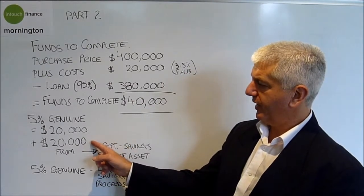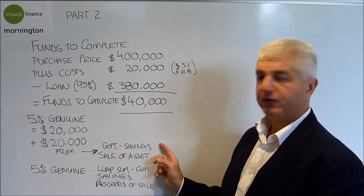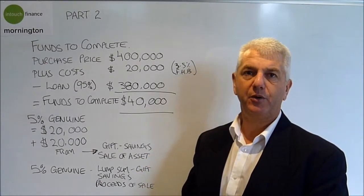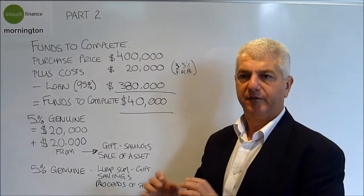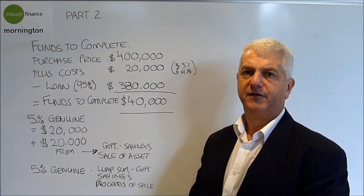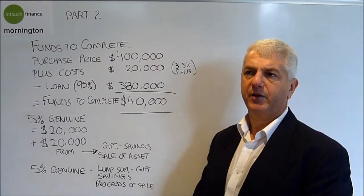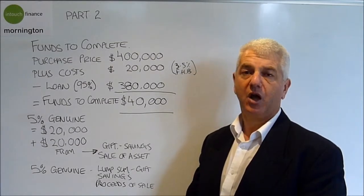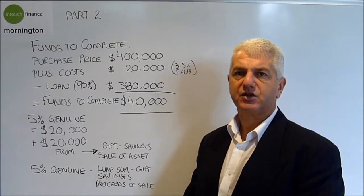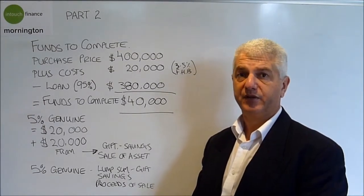The other $20,000 can come from anywhere. Whether it's a gift, genuine savings, or you've sold an asset like a car, boat, or motorbike, and you've got a lump sum to deposit towards the purchase of the house. That doesn't have to be genuine, it can come from anywhere. It could even be a personal loan, as long as the personal loan is taken into consideration in the services, which is what we spoke about before.